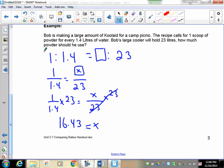Now obviously you're not going to measure 0.43 of a scoop. You'll probably throw in 16 and a half scoops depending on the size of the scoop. So you should have a sentence here. So Bob should use 16.43 scoops of Kool-aid.